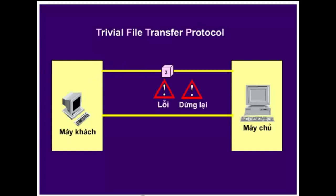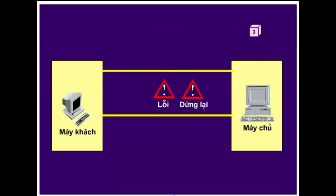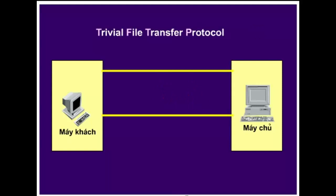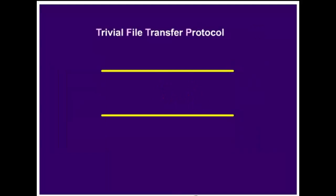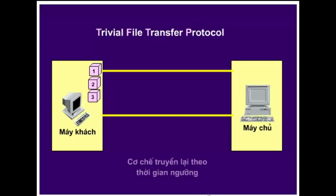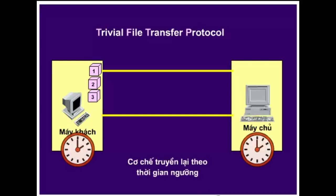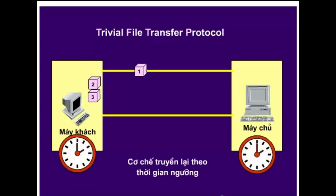Thông tin phản hồi từ bên thu có thể là một thông báo lỗi hoặc thông báo xác nhận. Trong trường hợp có thông báo lỗi thì quá trình truyền dữ liệu bị ngắt. Không giống FTP sẽ được trình bày ở phần sau, TFTP không truyền lại các gói bị mất. Tuy nhiên, mỗi máy tính sử dụng TFTP đều có cơ chế truyền lại theo ngưỡng thời gian định trước. Nếu vượt quá ngưỡng thời gian quy định mà bên phát không nhận được thông tin xác nhận thì nó tự động truyền lại gói tin vừa phát.